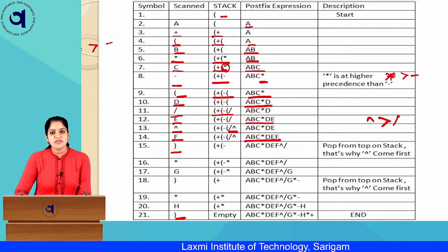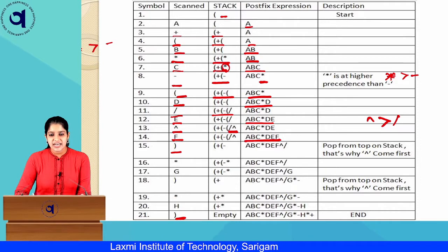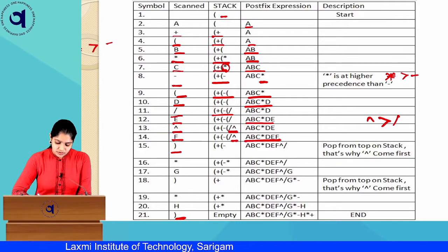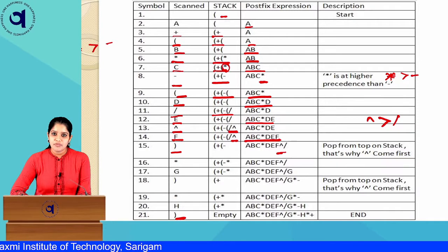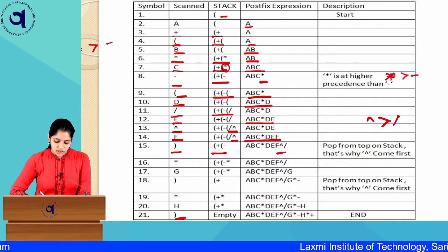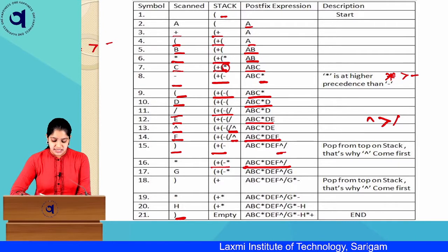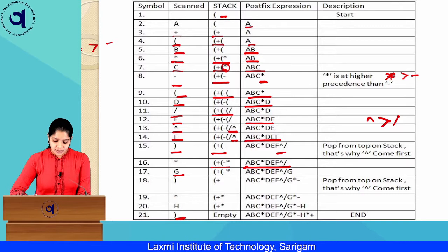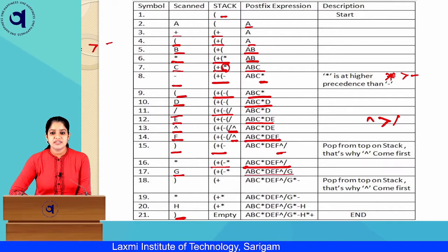Closing bracket encountered — pop until opening bracket. Cap is on top, so pop and push to Y, then slash. Discard the opening bracket. Stack: bracket, plus, bracket, minus. Y: A, B, C, star, D, E, F, cap, slash. Next is star — minus has lesser precedence than star, so push star. Stack: bracket, plus, bracket, minus, star. G is an operand — Y: A, B, C, star, D, E, F, cap, slash, G.